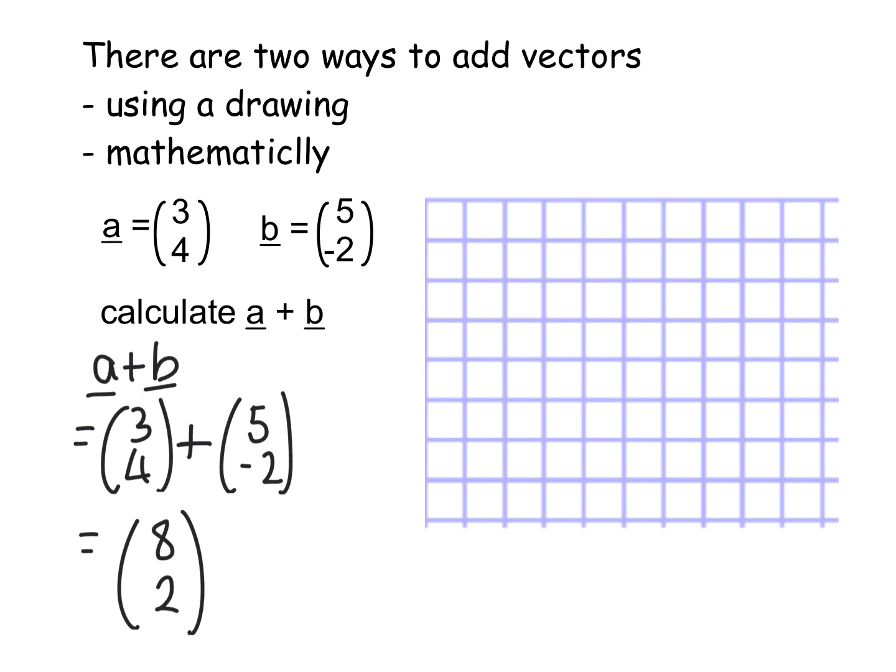If I do it using a drawing, however, and this has been asked in an exam before, A plus B means I'm going to pick a starting point and I'm going to maybe start down here because I know what this is going to look like. So if I draw vector A first of all, that would be going along 3 up 4. So this would be vector A.